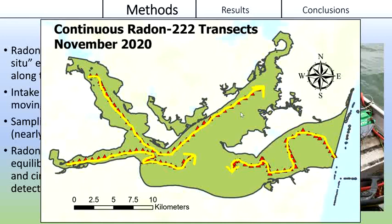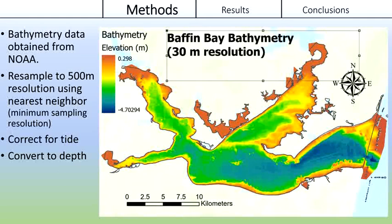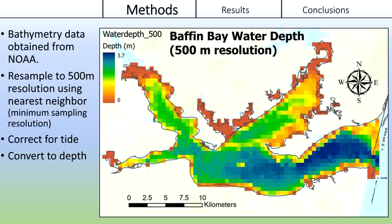The next step was to gather bathymetry data from the NOAA website. Our field measurements were taken at about 500-meter intervals, so I resampled the bathymetry data to that resolution. This was then inverted to give water depth instead of elevation, and since NOAA supplied this relative to the NAVD 88 datum, I added the datum tide height at the time of sampling to remove the negative values.